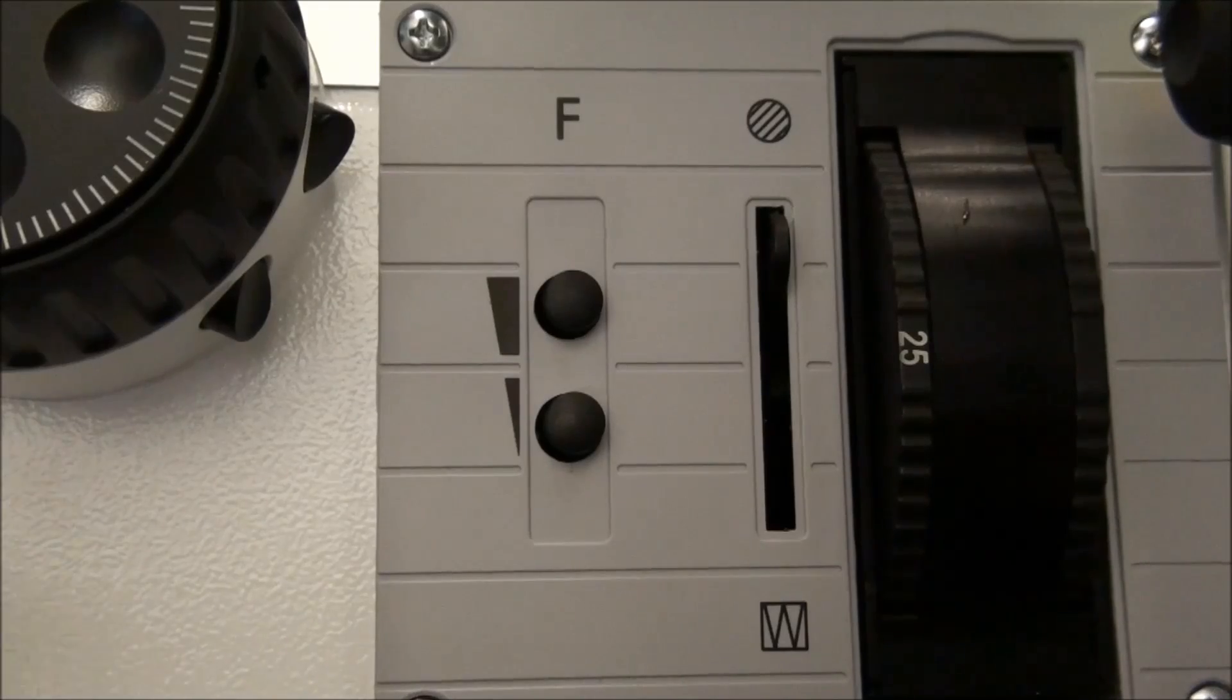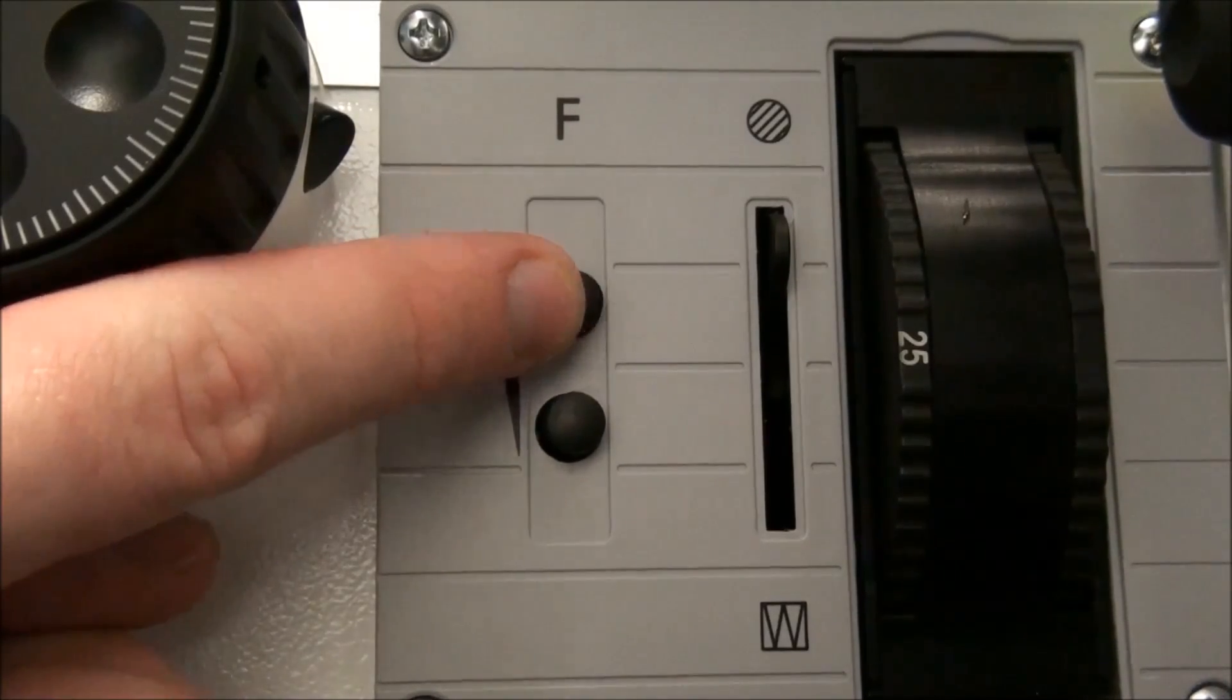Reopen the diaphragm by rolling the F wheel up or press the up button in a stepwise fashion. Open it until the images of the blade just leave the field of view.